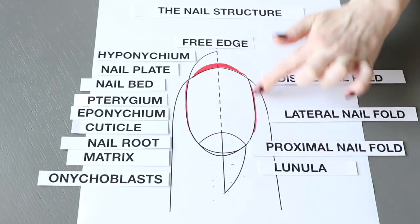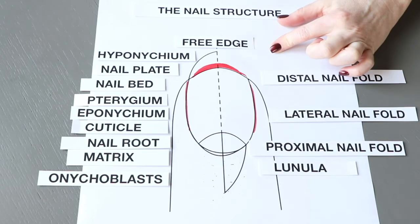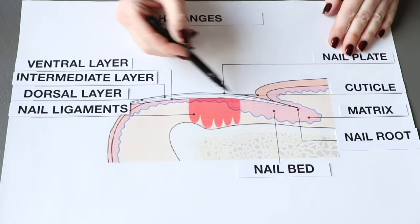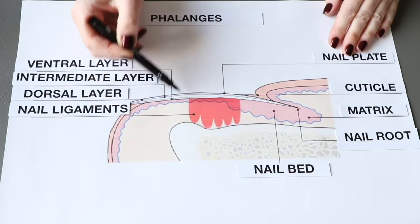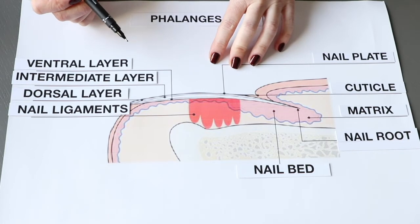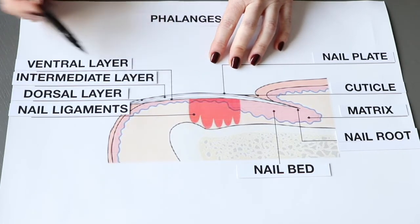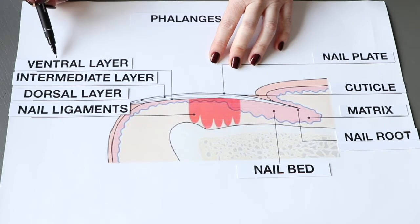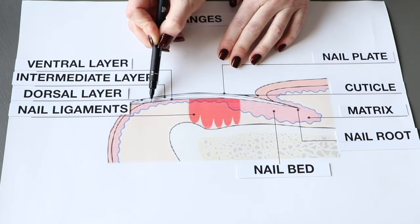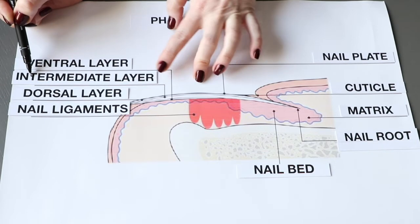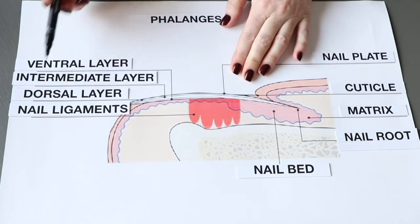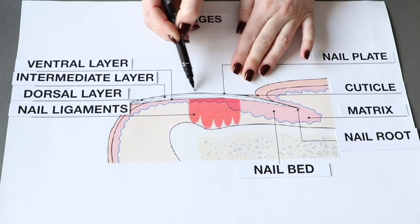The nail plate rests upon the nail bed, and here are the nail ligaments — blood vessels and nerve endings which are thickly adjoined to the nail wall. The nail bed is formed of three layers: the first is the deep layer called ventral, which is keratin produced by the nail bed; then there is the intermediate layer of soft keratin; and the dorsal layer, which is the top layer we work with when applying artificial materials.